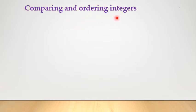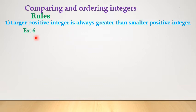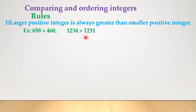Now let us study comparing and ordering integers. Rule 1: a larger positive integer is always greater than a smaller positive integer. For example, 658 is greater than 460, and 1234 is greater than 1231.